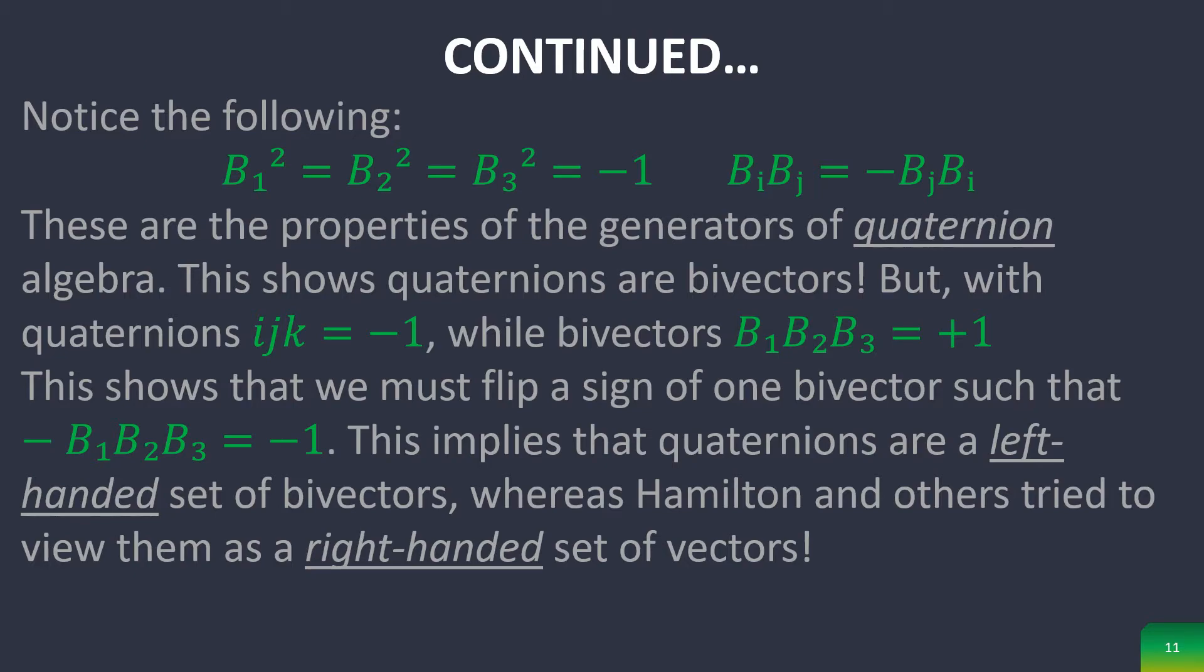This shows that we must flip a sign of one bivector such that it's equal to negative 1. This implies that quaternions are a left-handed set of bivectors, whereas Hamilton and those who created quaternions tried to view them as a right-handed set of vectors, which is obviously significantly less intuitive.